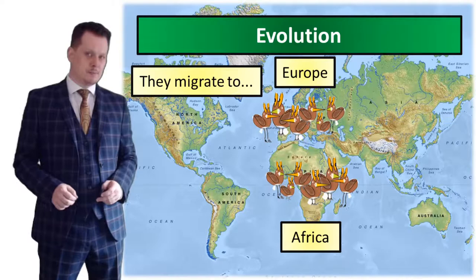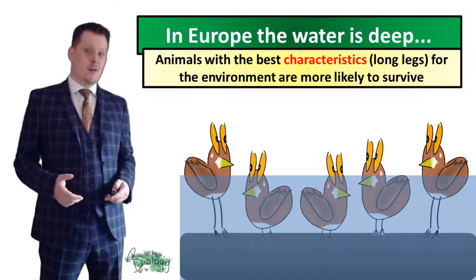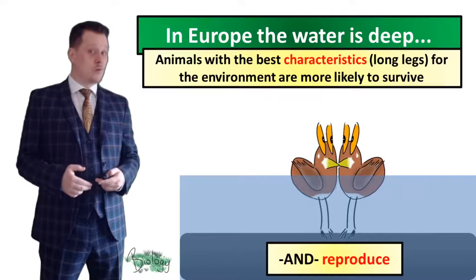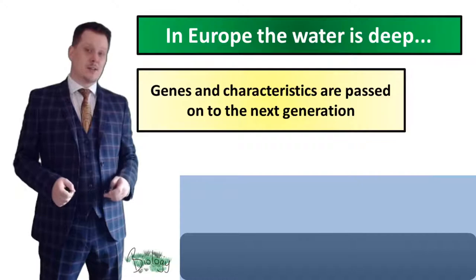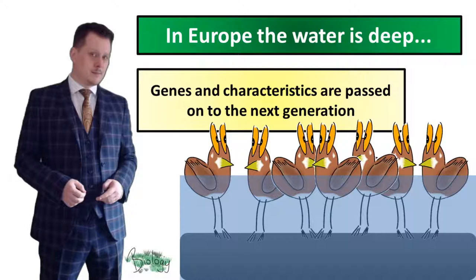In Europe the water is very deep, so the animals with the best characteristics — long legs — are more likely to survive. Because they're more likely to survive, they're more likely to reproduce, and that means the long leg characteristic is going to be passed on to the next generation. Eventually all of the offspring are going to have longer legs.